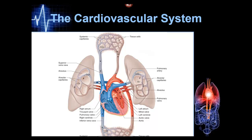Blood has low oxygen because it's traveled through the tissues that unloaded most of the oxygen, and it's coming back to the heart to be pumped to the lungs. Blood from the superior vena cava and inferior vena cava dumps into the right atrium. The right atrium contracts and pushes blood through the tricuspid valve down into the right ventricle.